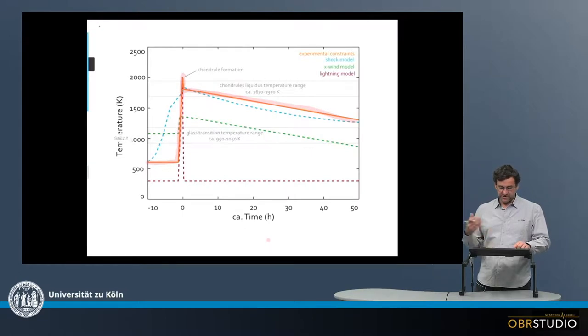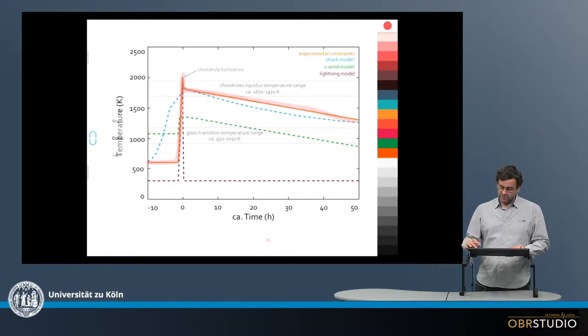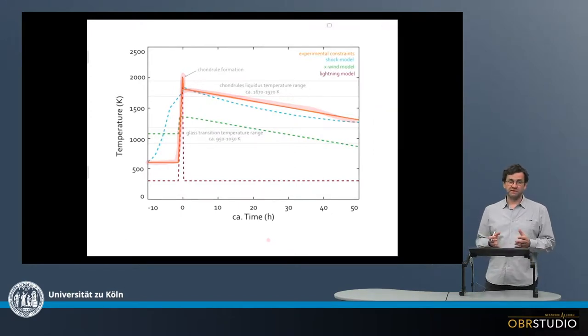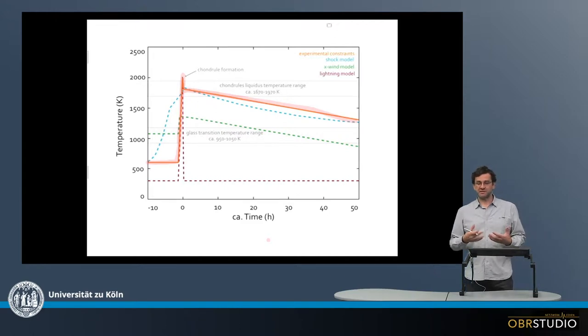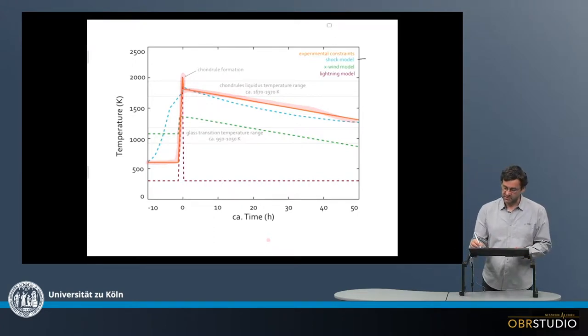Then in addition to these experimental constraints, or following these experimental constraints, it has been attempted to find mechanisms explaining this chondrule formation. And there are currently three, four main mechanisms that are suggested. One is the shock wave model, and the X-wind model and the lightning model.